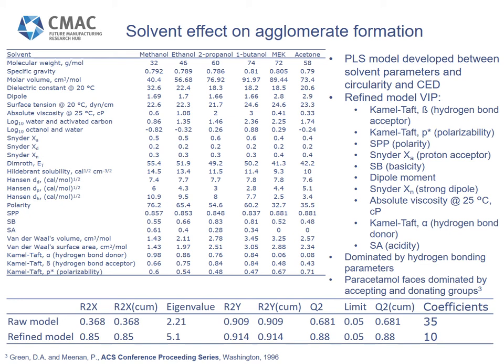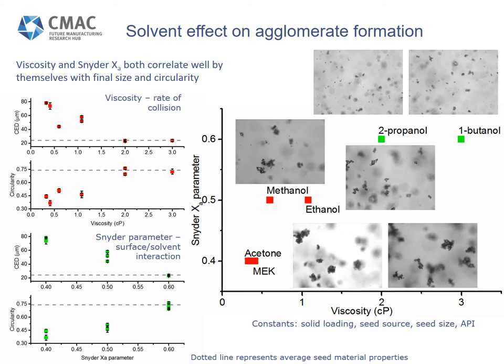The trend is not as clear when using a measure of polarity. If polarity is not suitable for describing the solvent property influencing agglomeration, can we identify others? Shown here are commonly available solvent parameters, and we've used these to build a partial least squares model between the parameters themselves and the final particle circularity and size. After refining the model to maximize the fit, we're left with a range of parameters dominated by hydrogen bonding effects. This is perhaps unsurprising, as it's previously been shown that the faces of paracetamol crystals are dominated by hydrogen bond accepting and donating functional groups. Delving deeper, one of the Snyder parameters and viscosity correlate well with the final particle circularity and size. Solvents with high viscosity and high Snyder parameters lead to conditions with little or no agglomeration.